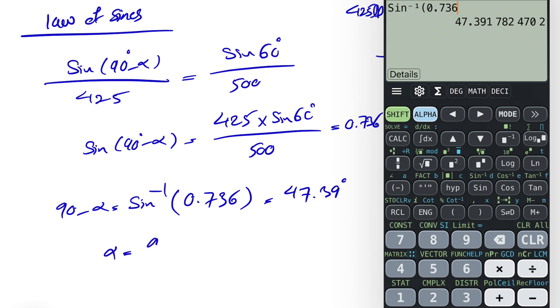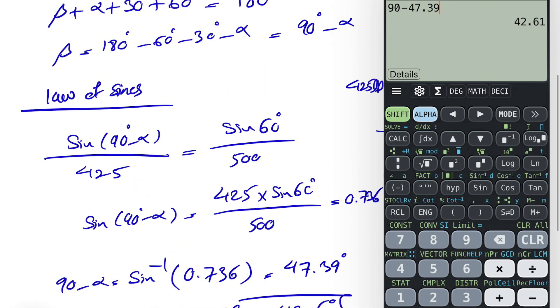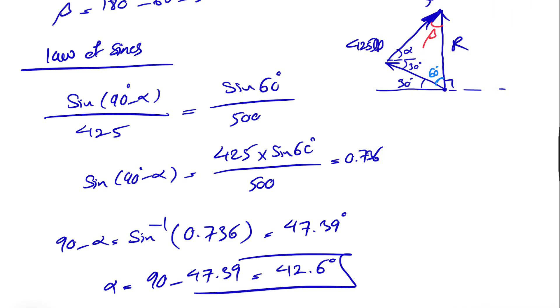Or our alpha would be 90 minus 47.39, which is 42.6 degrees, and that's the angle alpha that we were looking for.